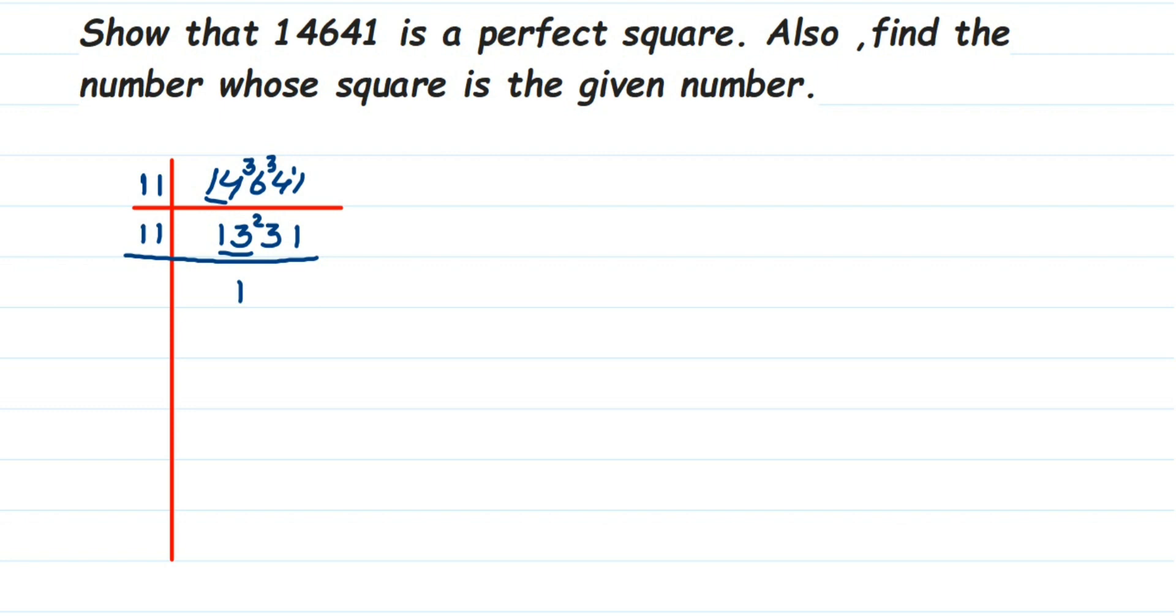11 once is 11. Now 121 is actually the square of 11, so this number should be divisible by 11 again. 11 once is 11. I'm taking 12 here. 11 once is 11, so 1 is the remainder, and then we got 11.